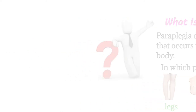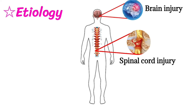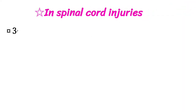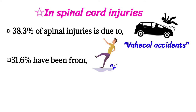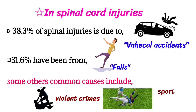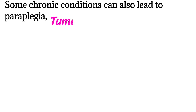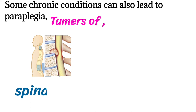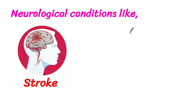The most common etiology of paraplegia is spinal cord injuries and brain injuries. 38.3% of spinal cord injuries are due to vehicle accidents, and 31.6% have been from falls. Some other common causes include violent crimes or sporting accidents. Some chronic conditions can also lead to paraplegia, like tumors of the spinal cord and tumors of the brain.